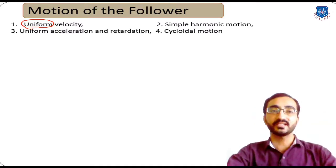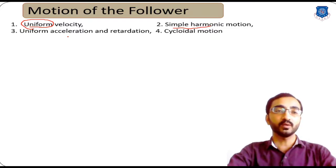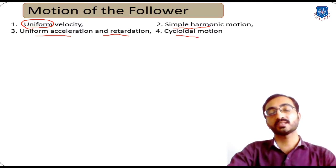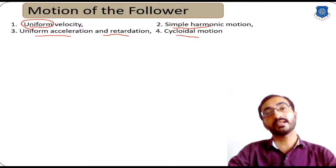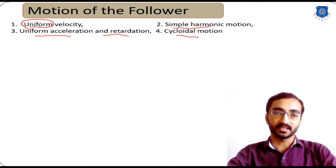So the first category is uniform velocity. The second is simple harmonic motion. The third is uniform acceleration and retardation. And the fourth is cycloidal motion. These four types of motion can occur while designing a cam and follower system.